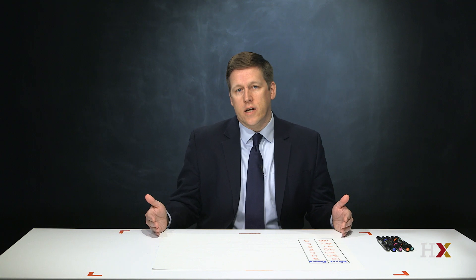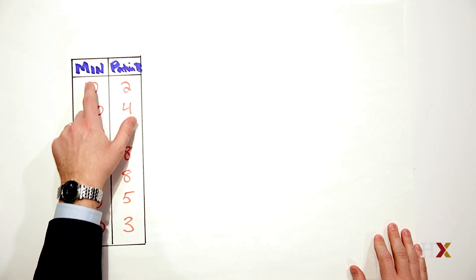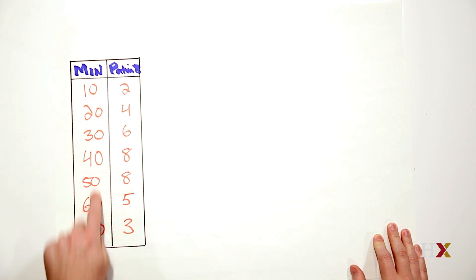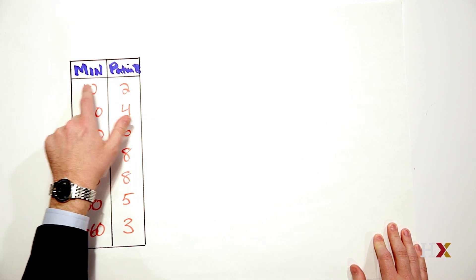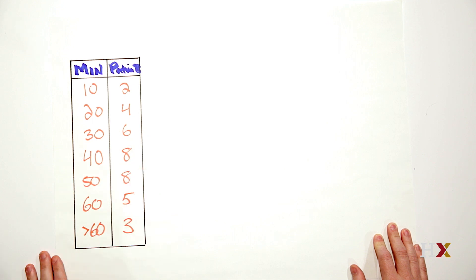Using a data collection form, you collected this data for the cycle time of patients in a single day. We've got our minutes going along the left-hand column and the number of patients that had a cycle time within that time interval on the right-hand column.